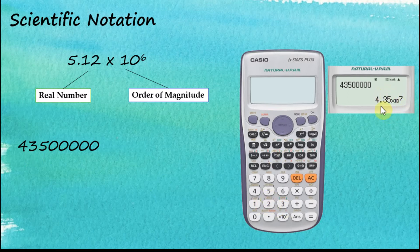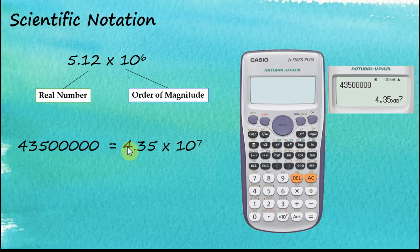Immediately you can see that the answer is displayed in scientific notation: 4.35 times 10 to the power of 7. So this is equal to 4.35 × 10^7.